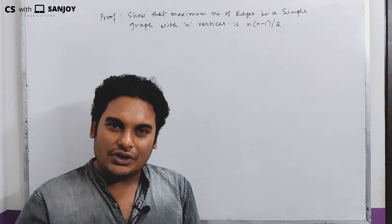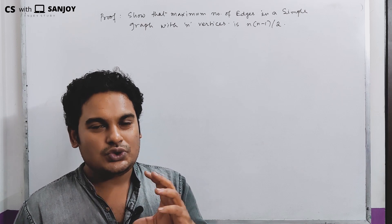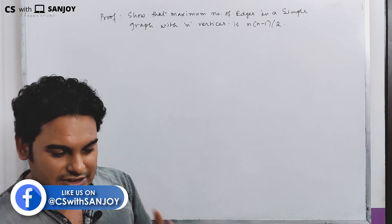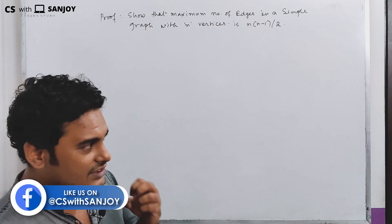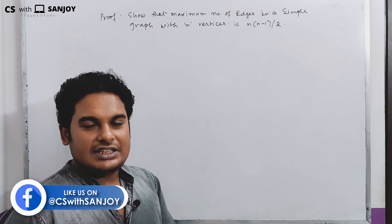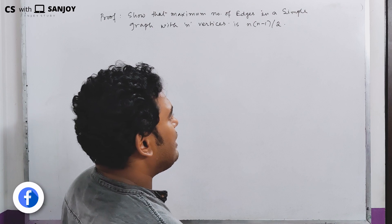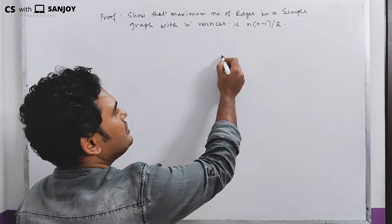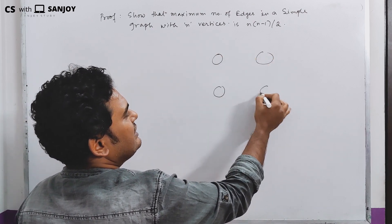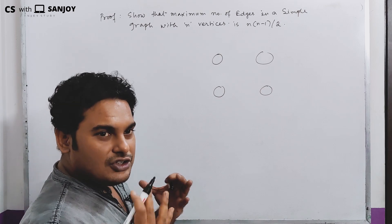This is the proof, and it will be very good. First, I will explain what I want to say with an instance, and then I will prove it formally. In our graph with 4 vertices, I will draw the maximum edges visually.